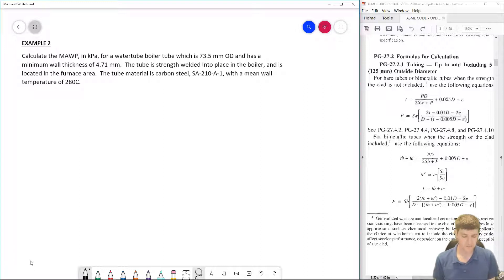So here's our example number two. Calculate the MAWP, the maximum allowable working pressure, for a water tube boiler tube which is 73.5 millimeters outside diameter (OD) and has a minimum wall thickness of 4.71 millimeters. The tube is strength welded into place in the boiler and is located in the furnace area. The tube material is carbon steel, SA210-A-1, with a mean wall temperature of 280 degrees Celsius.